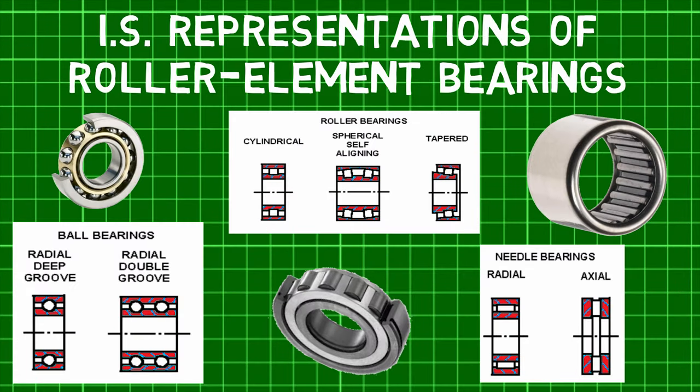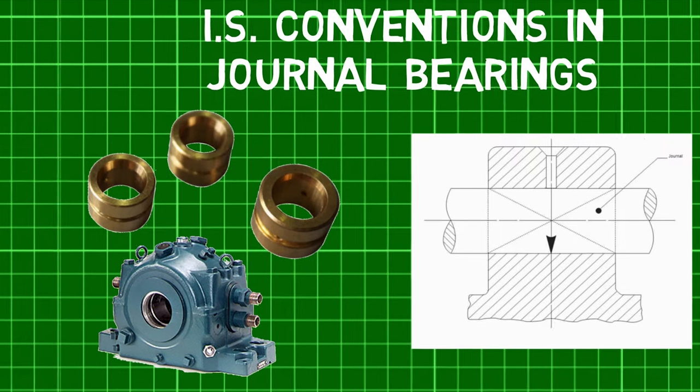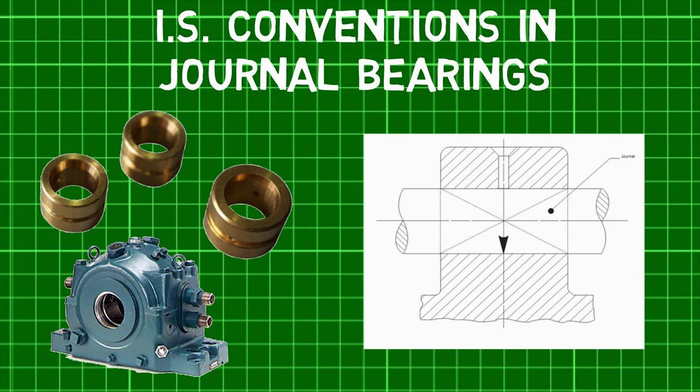Hence, we first saw what IS conventional representation is — first in roller bearings and then in journal bearings.